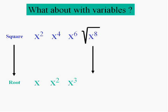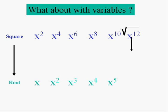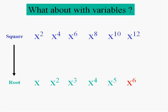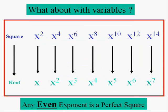As is x to the eighth. The square root of x to the eighth is x to the fourth. The square root of x to the tenth is x to the fifth. So any even exponent is going to be a perfect square. All you have to do is divide it by two and you'll have the square root. These are going to be the perfect squares of any variable — the even exponents. Any even exponent is a perfect square.